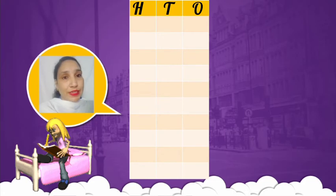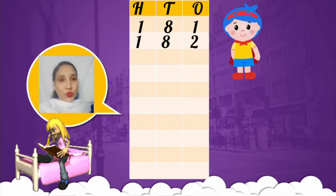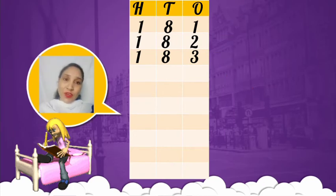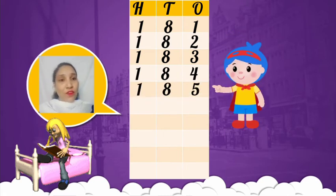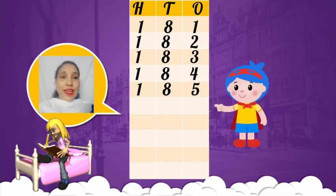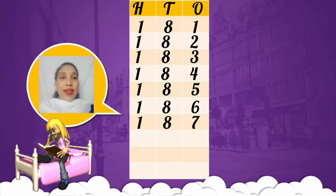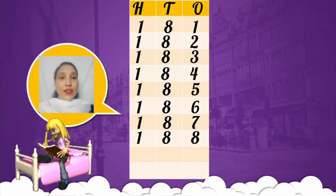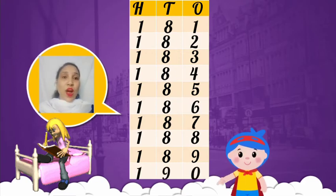What comes after 180? Yes, 181. Next number 182. After 182 comes 183. The next number will be 184. Next number 185. What comes after 185? Yes, 186. Next number will be 187. Next number 188. The next number after 188 is 189. Next number 190.